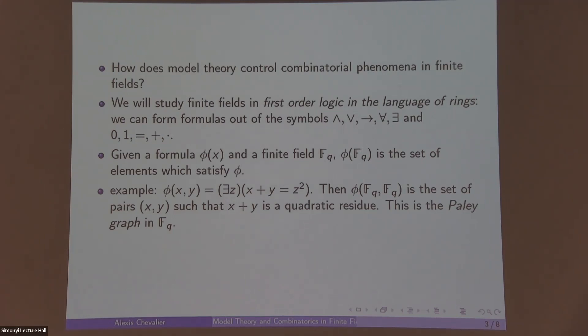Given an example, consider the formula with two free variables φ(x,y) which says that there exists z such that x + y = z². Then φ of, well, the solution satisfy, we can think of as a graph.